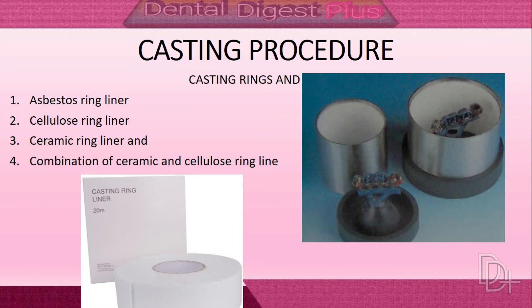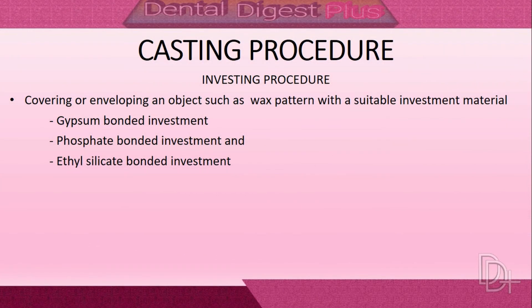Asbestos is no longer used in dentistry because of its carcinogenic and toxic potential. The casting ring liner acts as a cushion allowing expansion of the mold, permits easy removal of investment after casting, and reduces heat loss as a thermal insulator when the ring is carried from the furnace to the casting machine. To ensure uniform expansion, the liner is cut to fit the inside diameter of the casting ring with no overlap.